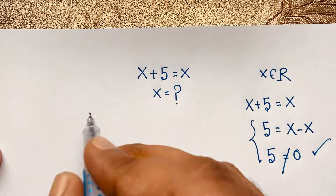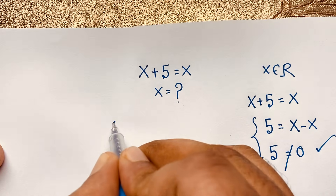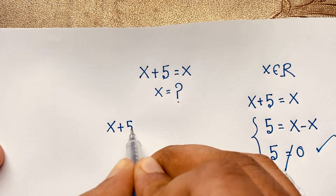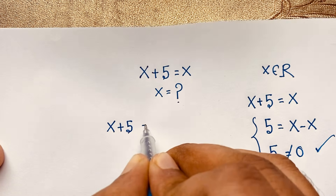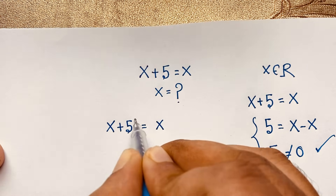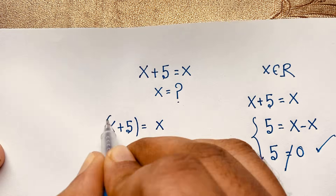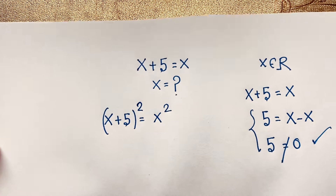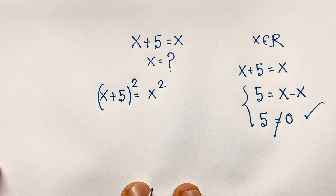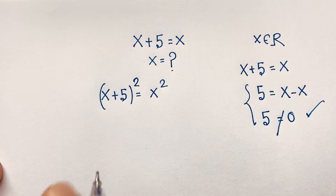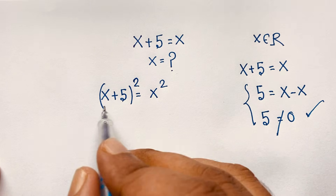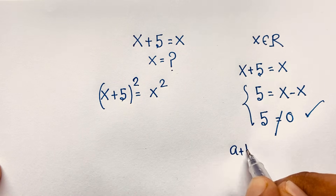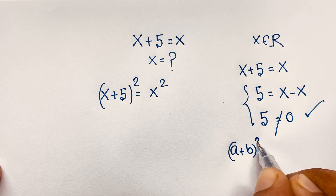So I will use both sides squared. I take our question, which is x plus 5 is equal to x, and I apply the square to both sides. This uses the formula for (a + b) whole squared, which equals a² + 2ab + b².